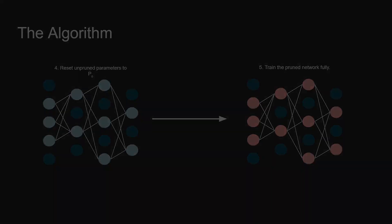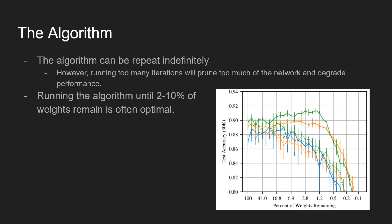Typically, the algorithm runs until a certain percentage of the parameters are pruned out. However, the algorithm can repeat indefinitely. Pruning out too many parameters will degrade performance as the smaller networks will lack the capacity to fully learn their task. Often, pruning until only 2-10% of the parameters remain is the best.